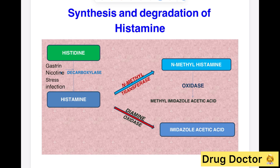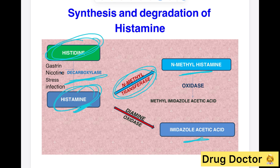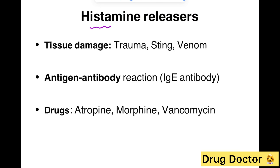Histidine is converted to histamine through decarboxylation, and this histamine is stored in mast cells. Histamine is further metabolized through two enzymes: N-methyltransferase, which leads to N-methyl histamine, and diamine oxidase, which leads to imidazole acetic acid. These are the two end products from histamine degradation.